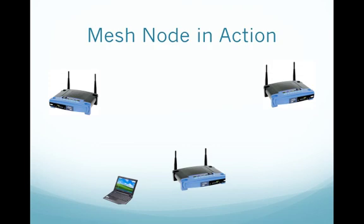Once you turn one of these into a mesh node, it changes the way the device works. The devices will now communicate with each other using the wireless antennas, so traffic between nodes travels over wireless. If you want to connect into that mesh node, you'll need to use an Ethernet cable and plug your laptop, server, or other device into the LAN ports on the back.